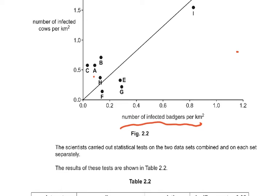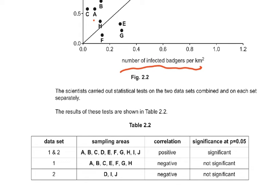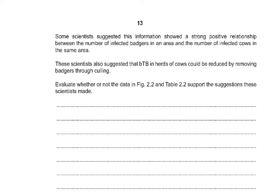The scientists carried out a statistical test on the two datasets combined and on each set separately. Combined data (A–J): positive correlation, significant at p = 0.05. Dataset 1 (A–H): negative, not significant. Dataset 2 (D, I, J): negative, not significant. The question asks: some scientists suggested the data showed a strong positive relationship between infected badgers and infected cows in the same area, and that BTB in cow herds could be reduced by culling badgers — evaluate whether figure 2.2 and table 2.2 support this suggestion.